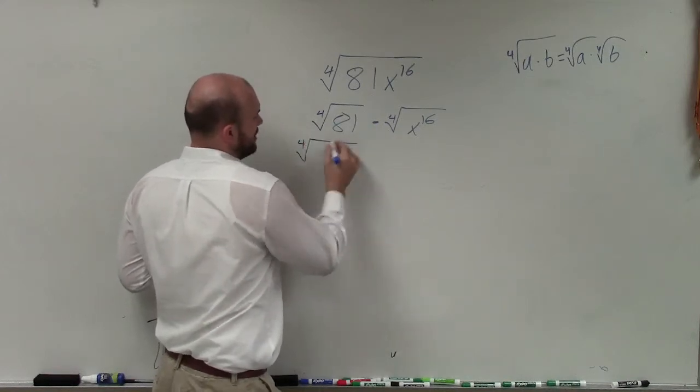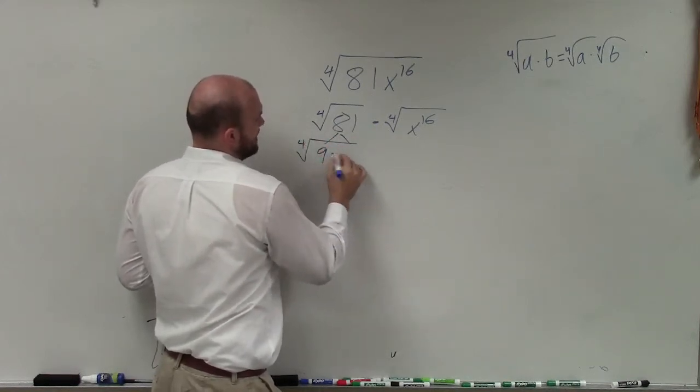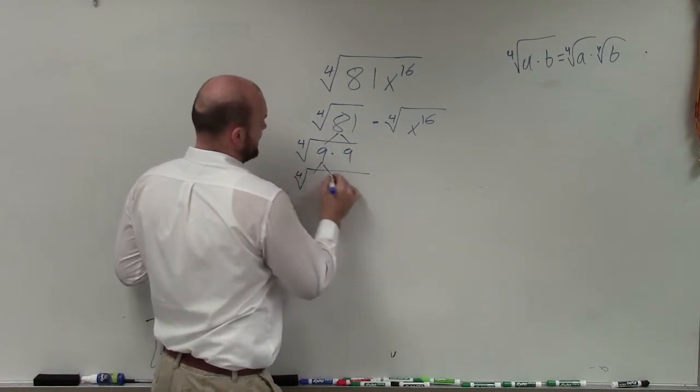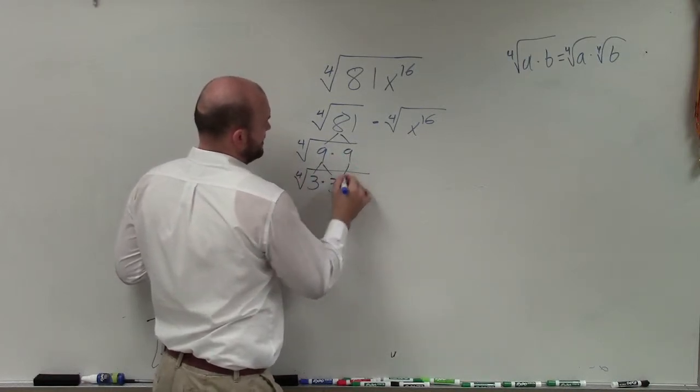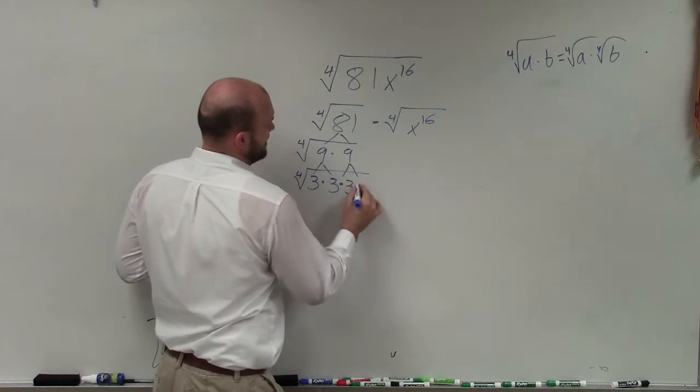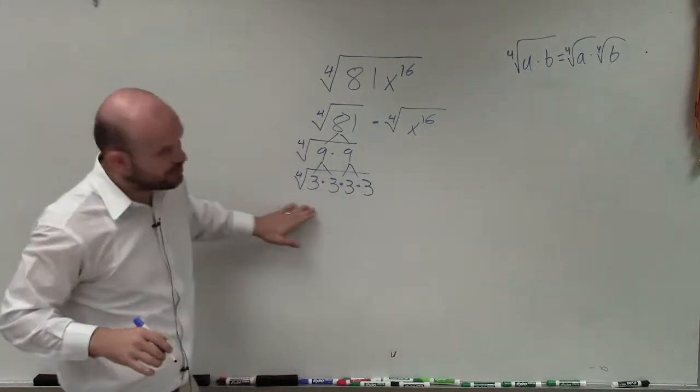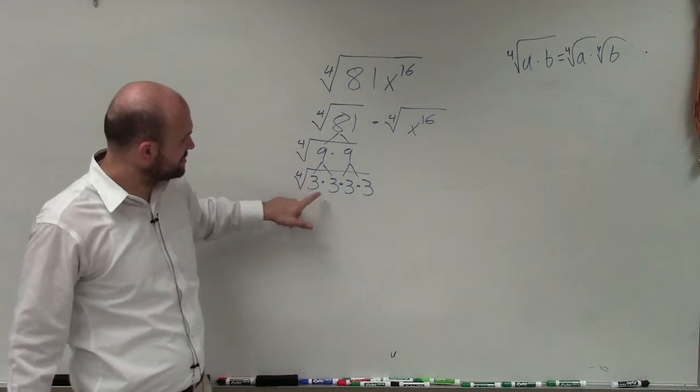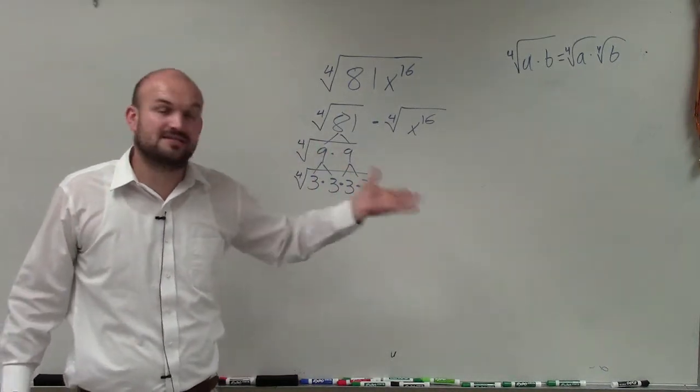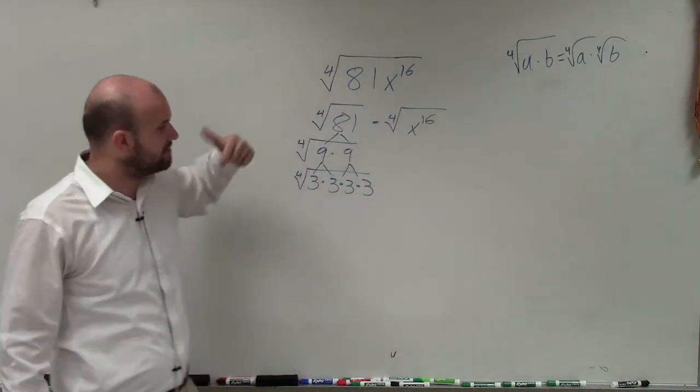So 81 can be broken down into 9 times 9. And that can be factorized to 3 times 3 times 3 times 3. So that is what we call the prime factorization of 81 because 3 is a prime number, and they all multiply to give you 81.